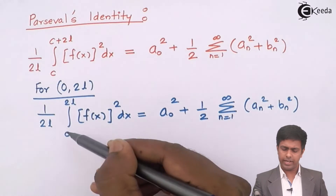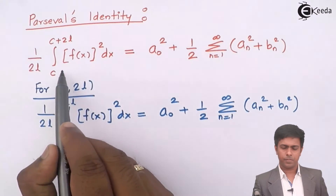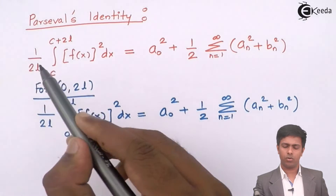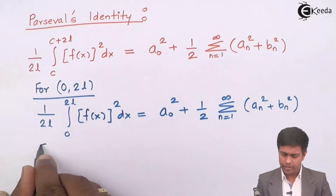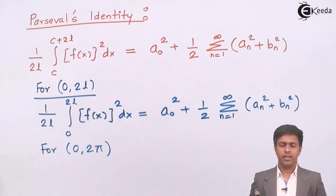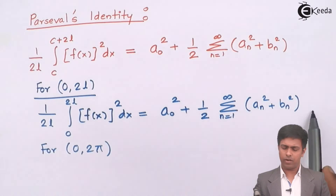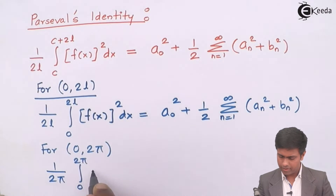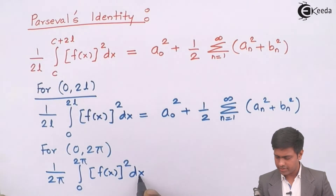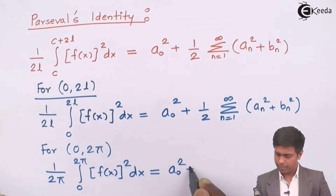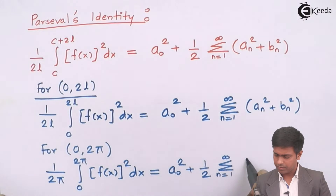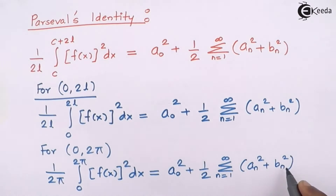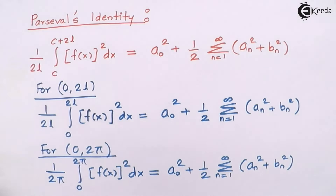For the range -l to l, the formula stays the same — we put c = -l, so the limits become -l to -l+2l, which is -l to l. For the range 0 to 2π, we put l = π, giving: 1 upon 2π, integration from 0 to 2π, of f(x) whole squared dx = a₀ squared plus 1/2 summation from n=1 to infinity of (aₙ squared + bₙ squared). Similarly, for -π to π, only the range changes and the rest of the formula remains the same.